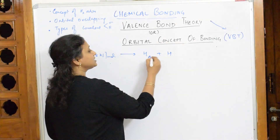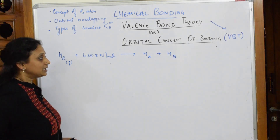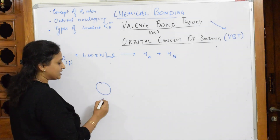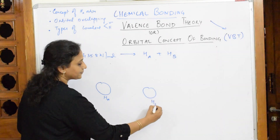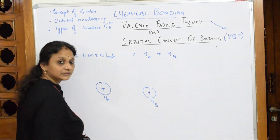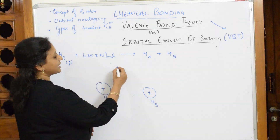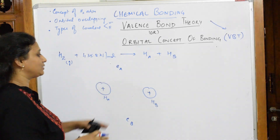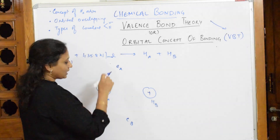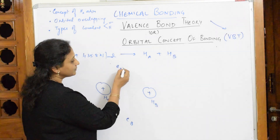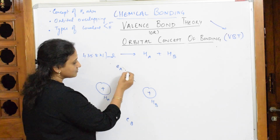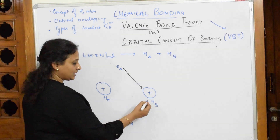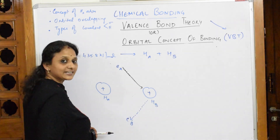I'm labelling one hydrogen atom as HA and the other as HB. When this particular atom HA and HB is formed, HA has a nucleus in the center with electron Ea, and HB also has a nucleus with electron Eb. Now, there are new attractive forces formed between them, along with already-existing forces between the electron and the proton inside each atom.